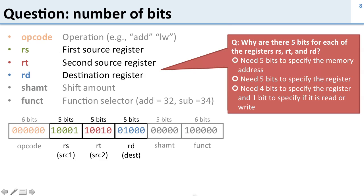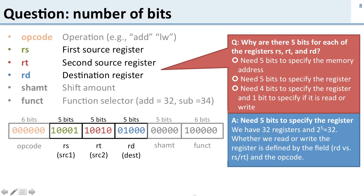Question: why do we have five bits for each of the registers in the instruction? The reason is we need five bits to specify which register. We have 32 registers, so we need five bits to specify which one because 2 to the 5th is 32.